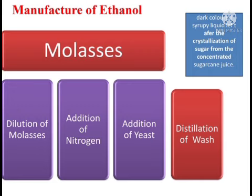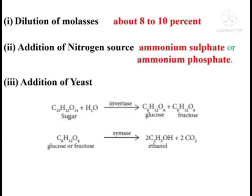Molasses normally contains 30% of sucrose which cannot be separated by crystallization in the manufacture of sugar. Molasses is a dark-colored syrupy liquid left after the crystallization of sugar from the concentrated sugar cane juice, containing nearly 30% of sucrose. This solution is involved in the first step: dilution of molasses. Dilution means addition of water, so the concentration of molasses is decreased. Molasses is first diluted with water, with the concentration of sugar reduced to about 8 to 10%.